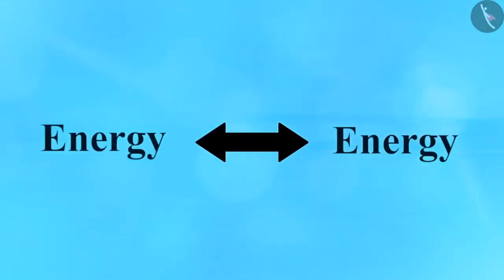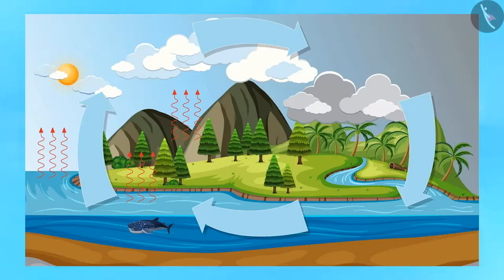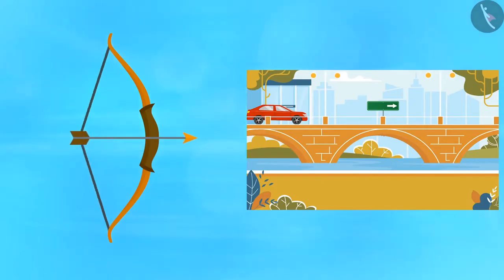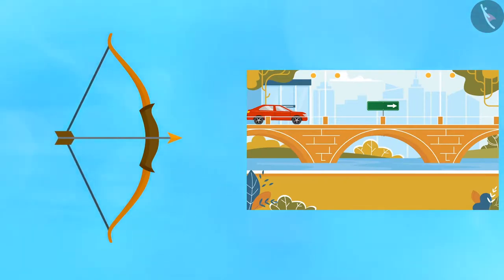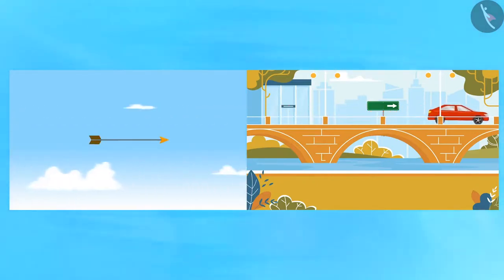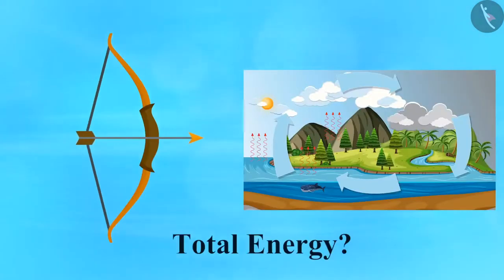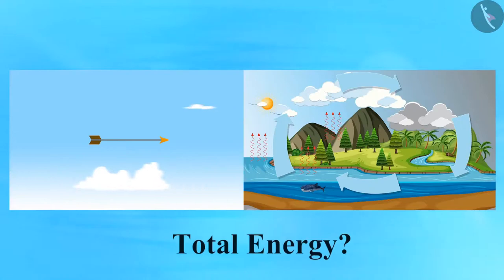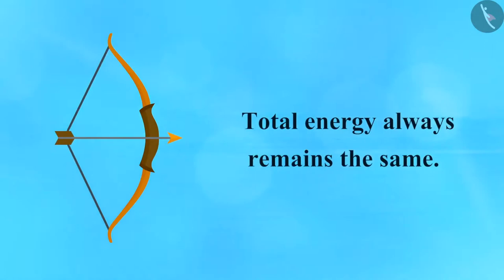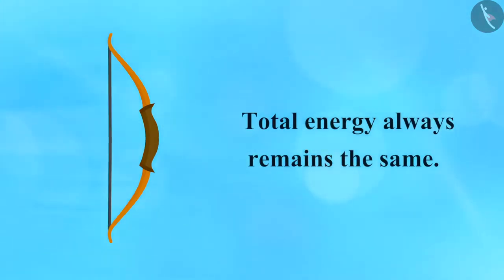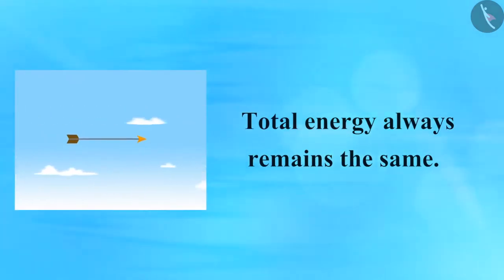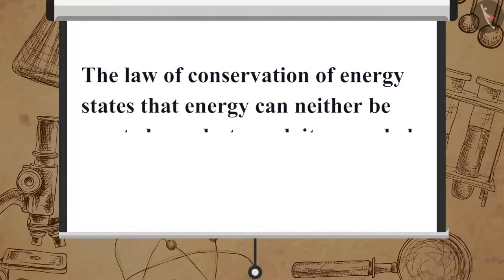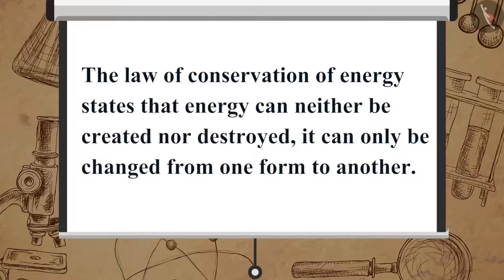Earlier we studied that energy can be transformed from one form to another — like energy transformation in the water cycle and photosynthesis, or examples of the bow and arrow and a running car. But do you know what happens to the total energy of the system before and after the transformation? The total energy always remains the same, even when energy is transformed from one form to another. This is known as the law of conservation of energy, which states that energy can neither be created nor destroyed — it can only be changed from one form to another.